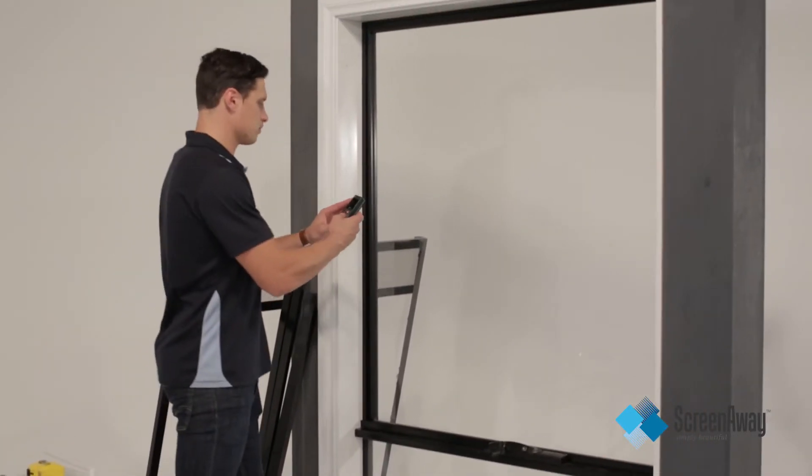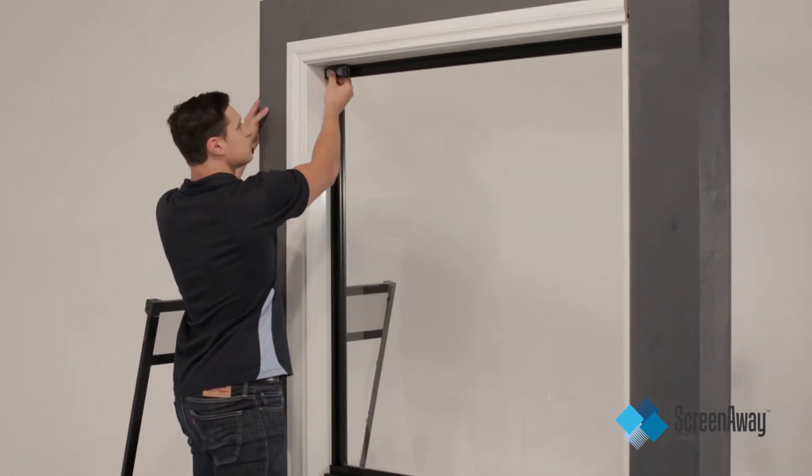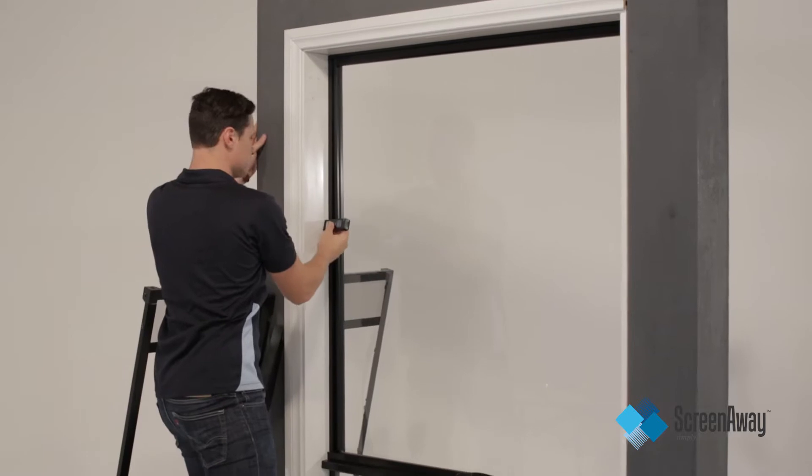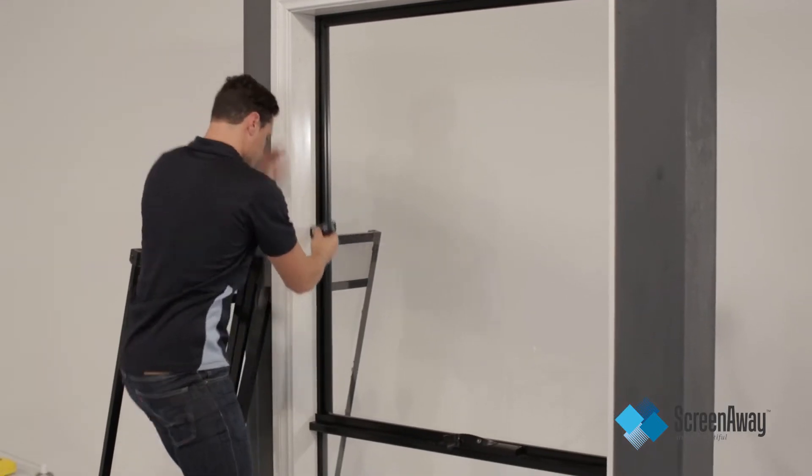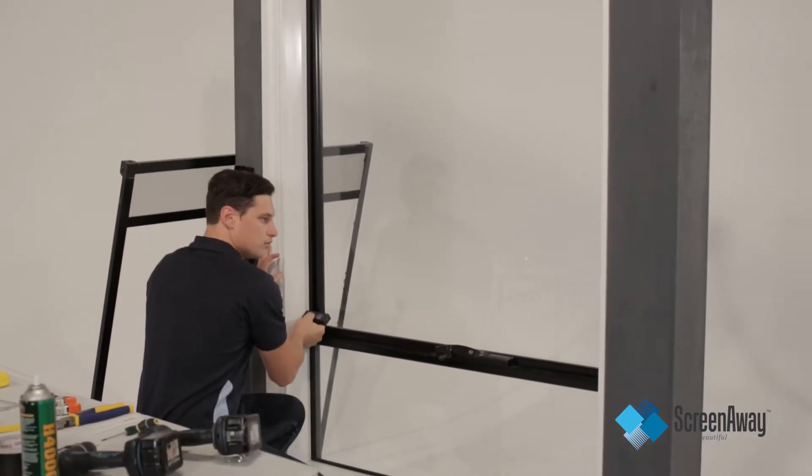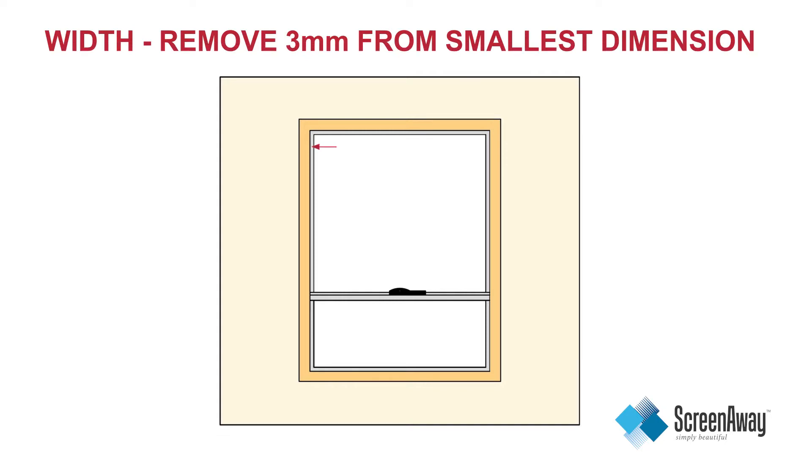Measure where the fly screen will be fixed in the same position as replaced static fly screen. Measure for width from the inside of one reveal to the other. Measure at three points, the top, the middle and the bottom. Take the smallest measurement and deduct three millimetres to get your final recordable width measurement.